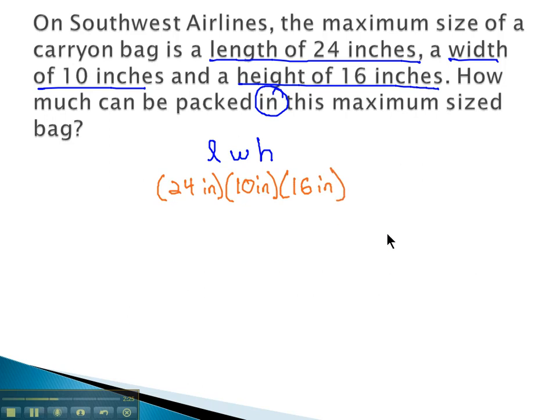We can quickly multiply together 24 times 10 times 16 to get 3,840. Let's do it in green. 3,840 inches times inches times inches are inches cubed. And this is the volume of our carry-on bag, 3,840 cubic inches.